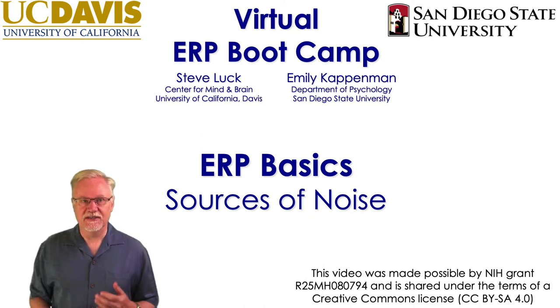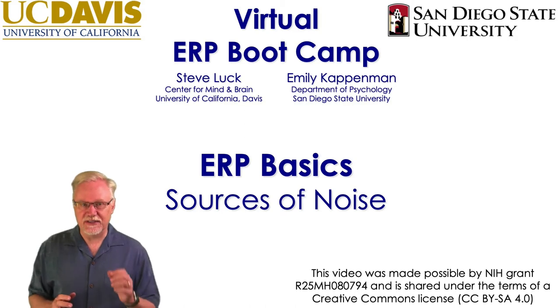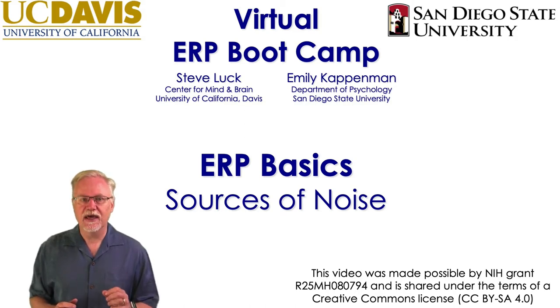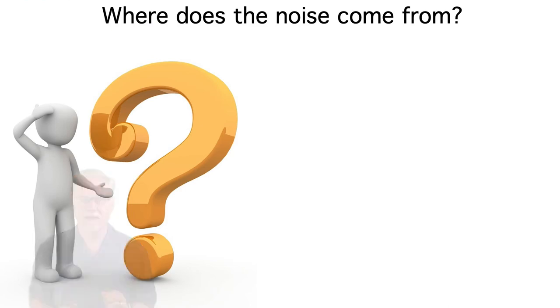Given that averaging is used to reduce the noise in the ERP waveform, and it's often difficult to get enough trials to produce an acceptable signal-to-noise ratio, it's important to ask where the noise comes from.